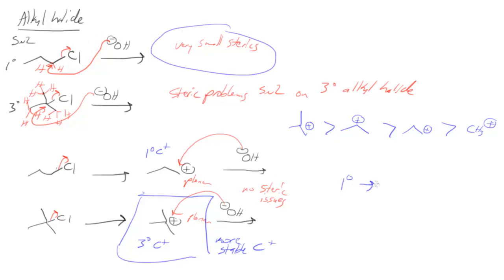Whereas a tertiary alkyl halide wants to do an SN1 type reaction. Why again? The primary wants to do an SN2 because of less sterics. And a tertiary wants to do an SN1 because it has a more stable carbocation.